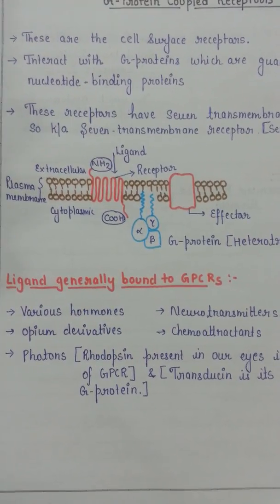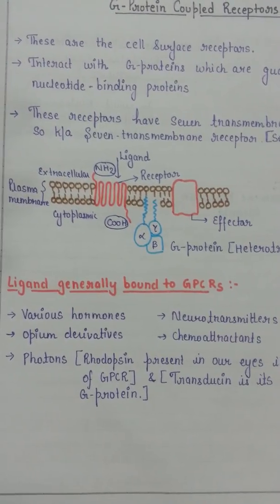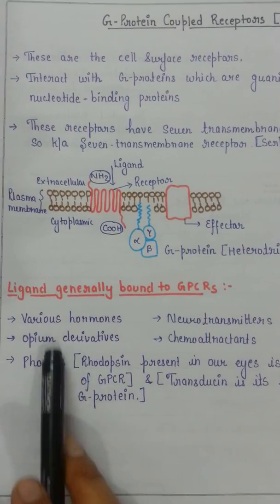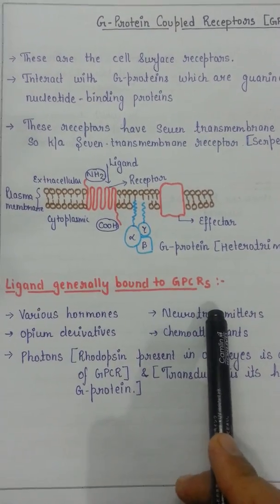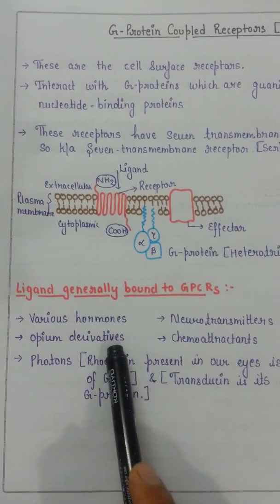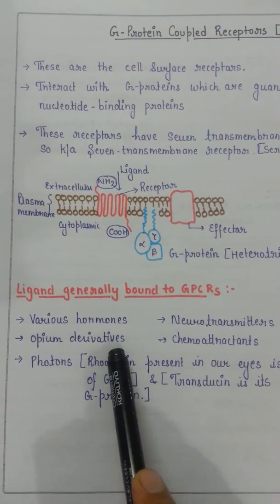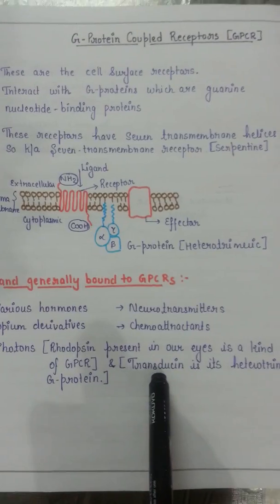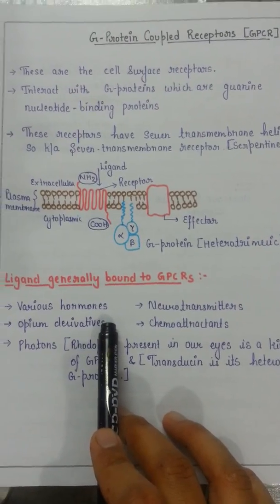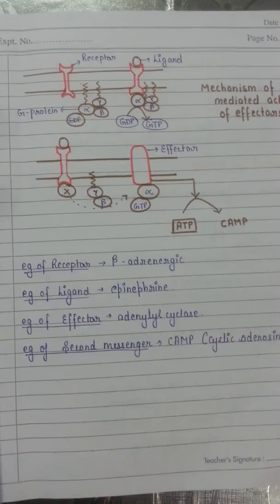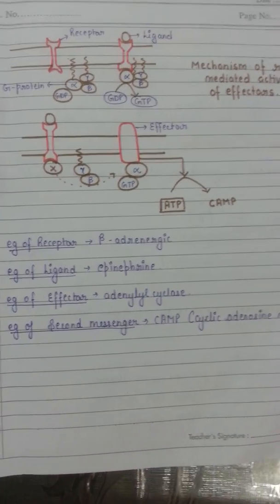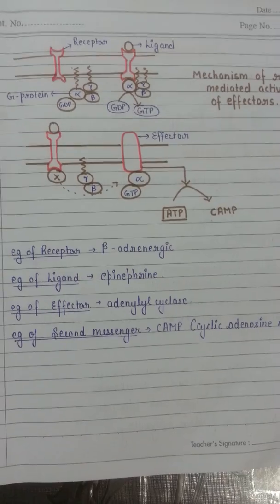Various ligands work with various G-protein coupled receptors and similarly various effectors produce the physiological response. Certain ligands include various hormones, neurotransmitters, opium derivatives, photons, and chemoattractants. Rhodopsin is a kind of GPCR and transducin works as its G-protein — these are certain examples of ligands and GPCRs.